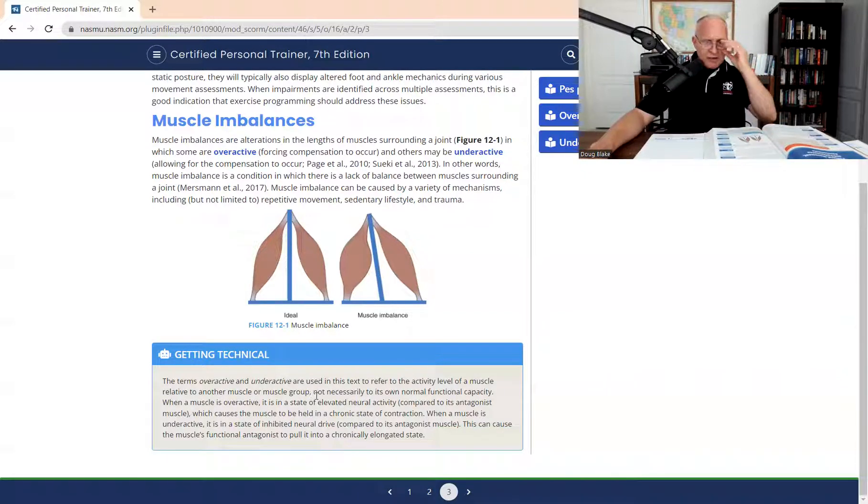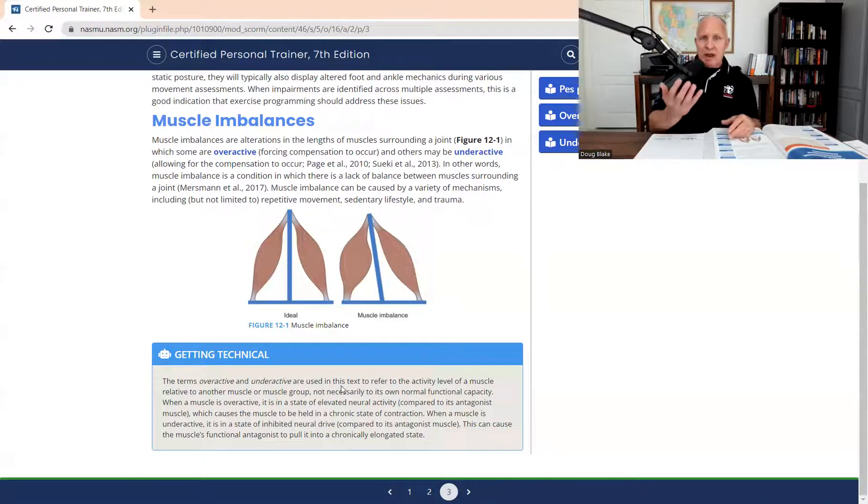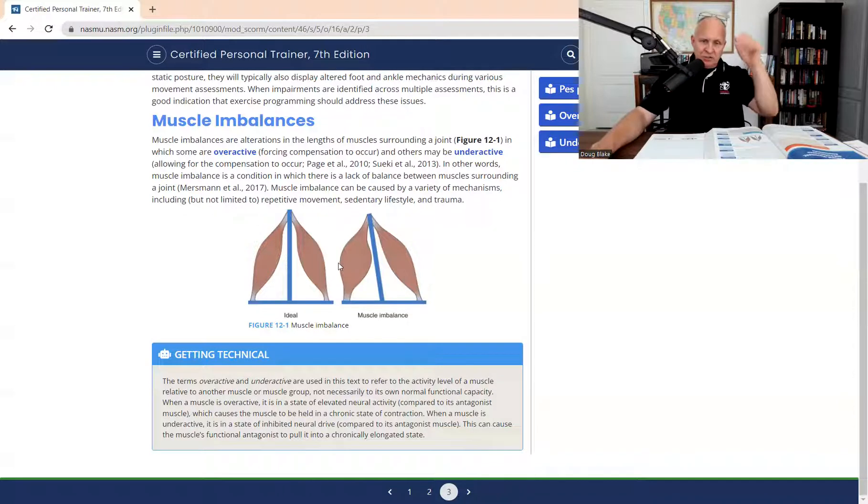The terms overactive, underactive are used to refer to the activity level of a muscle relative to another muscle. Stop, stop. Overactive muscles are only overactive. Why? Because they have an antagonistic underactive. The underactive guy is only underactive because in conjunction, there is in conjunction with it, there is an overactive. And that's what, if you look at this,